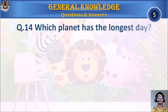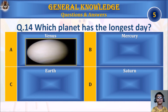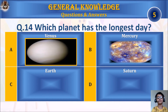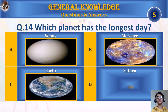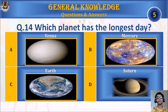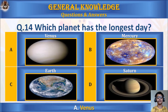Question 14: Which planet has the longest day? A. Venus, B. Mercury, C. Earth, or D. Saturn. Your time starts. The answer is A. Venus.